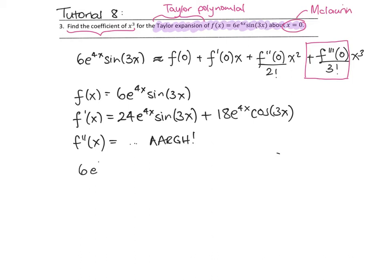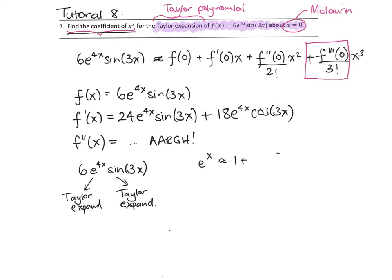What we're going to do is look at the function 6e to the 4x sine of 3x, and note that we want the coefficient of x cubed in the Taylor expansion. So I'm going to find a Taylor expansion for e to the 4x and one for sine of 3x, then multiply them together. I know that e to the x is approximately equal to 1 plus x plus x squared over 2 plus x cubed over 3 factorial — I've only gone as far as x cubed, since that's what we're interested in.